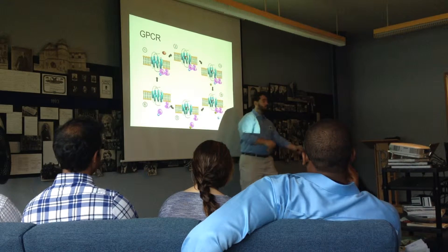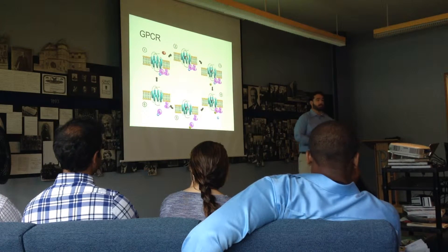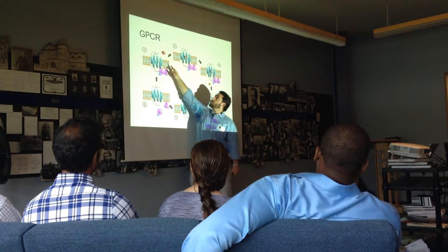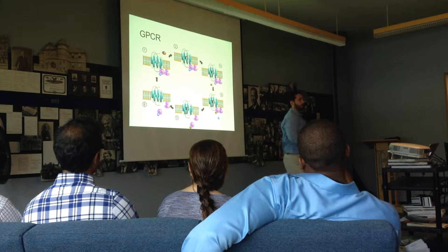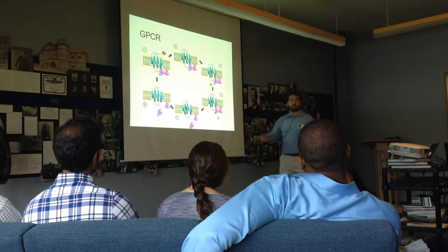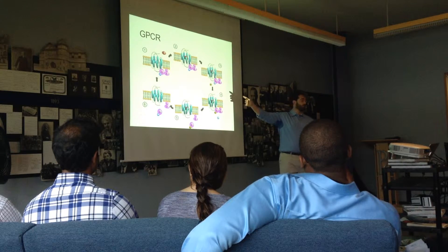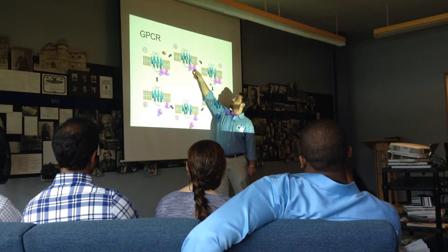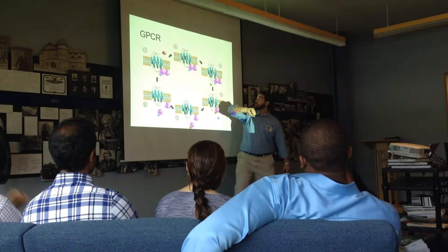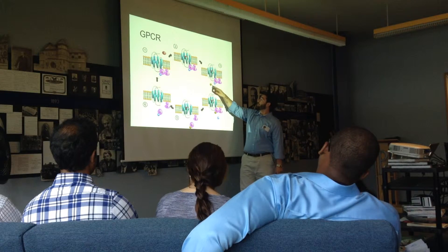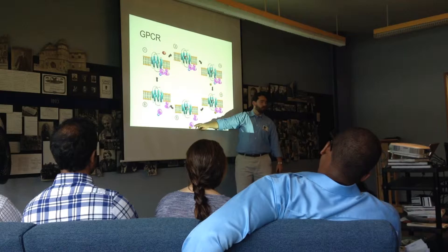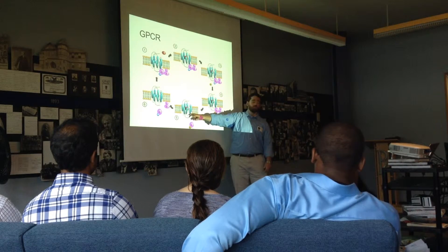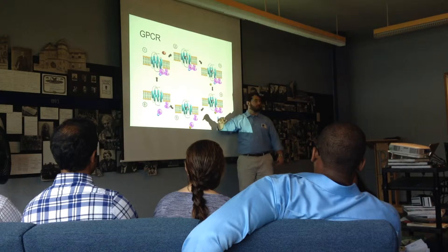A GPCR is a transmembrane protein. Some examples are the epidermal growth factor receptor. The receptor sits in the membrane — with the outside of the cell on one side and the inside on the other. Some molecule, like epidermal growth factor, binds the receptor. The epidermal growth factor will bind the receptor, and then on the other side of the membrane there are the alpha, beta, and gamma subunits of the GPCR. When you have binding, there's an exchange of GDP for GTP, and then the alpha subunit is released into the cytosol. The beta-gamma subunit dissociates from the GPCR but stays associated with the membrane, and those two send signals to tell the cell to divide.